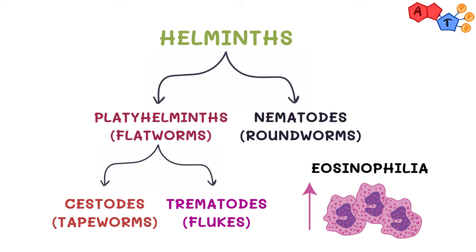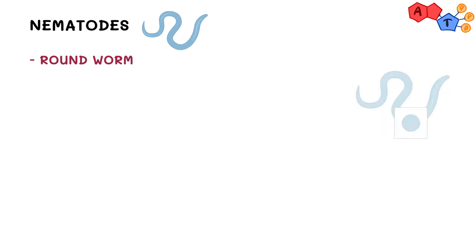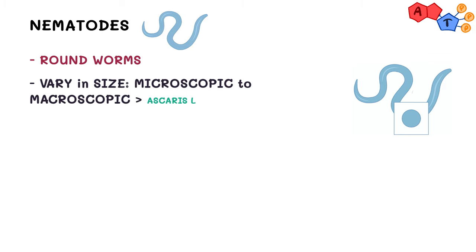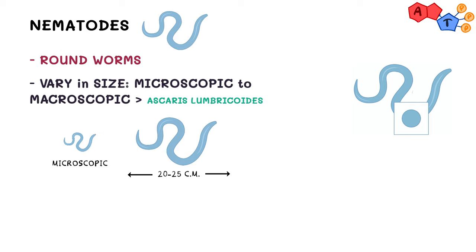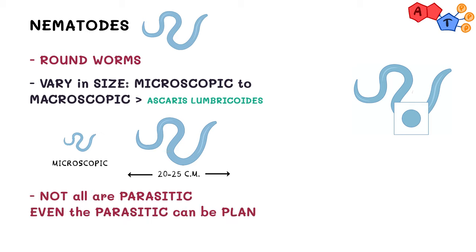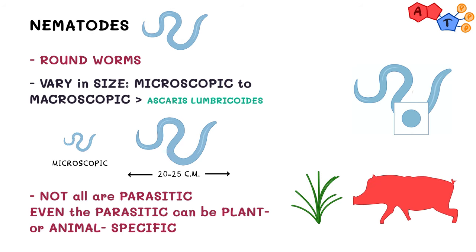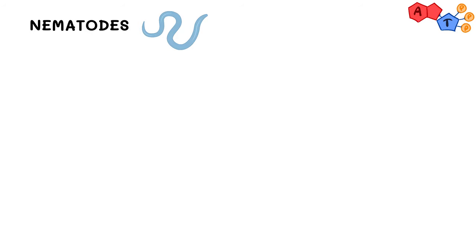We know they seem a lot, but the good news is that we in ATP have already done videos on all of them, so don't worry, you can easily cover them. In this video, we will complete our series and talk about nematodes. Nematodes are also known as roundworms; they vary in size — for some organisms they are microscopic, and some of them are tens of centimeters, like Ascaris lumbricoides. Not all nematodes are parasitic in nature, and even the parasitic ones can be plant or animal specific, meaning they don't exhibit parasitic activity against humans. In this video, we will focus on clinically important nematodes.